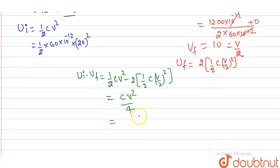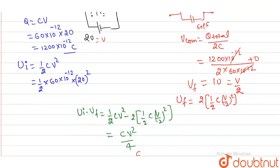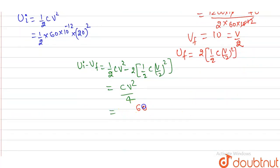C as value of 60 picofarad, that is 60×10^-12, V is 20 divided by 4.